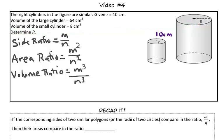Well, if we know the two volumes of the cylinders, both the larger cylinder and the smaller cylinder, we can set up that proportion. So, the ratio of the volume of the large cylinder to the volume of the small cylinder would be 64 over 8.